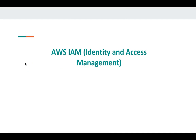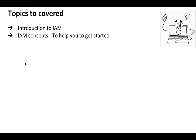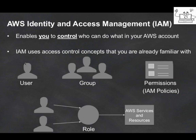Today we're going to discuss AWS IAM, which stands for Identity and Access Management. IAM is what allows you to handle who can do what in your AWS account. The role IAM performs is to provide you authentication and authorization to your AWS resources, using access control concepts such as users, groups, and permissions.